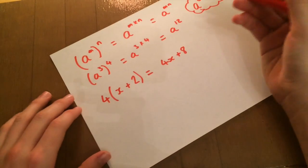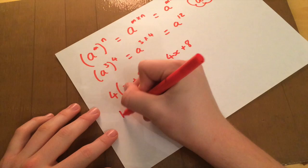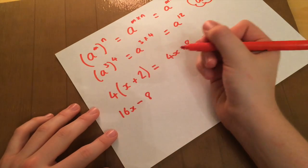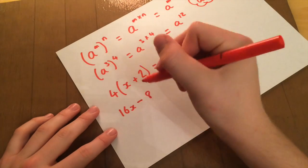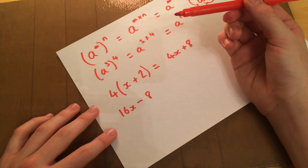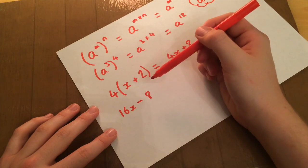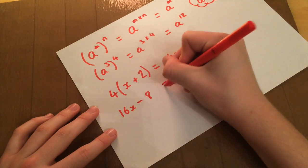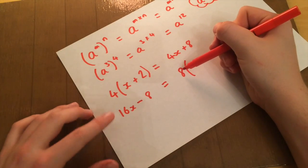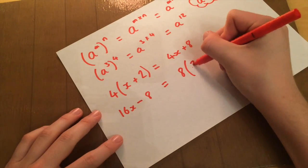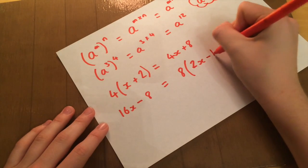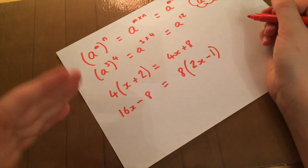However, if we take another statement, say, 16x minus 8, what you can do is you can take something out of that. So if we try and find the largest number that can fit into both of those, which I think is 8, so if we take 8 outside the brackets now, what do you have to times 8 by to get to 16x? And that's 2x. And what do you have to times 8 by to get to minus 8? And that's minus 1. So that's how you take stuff out of the bracket.